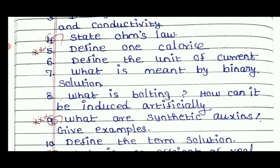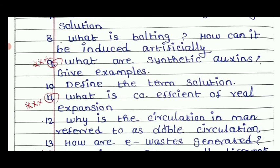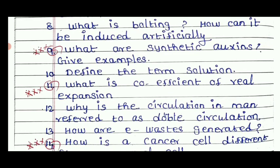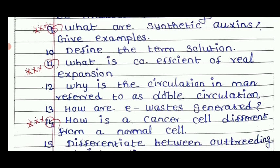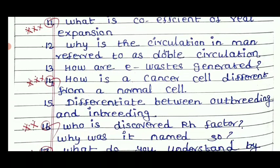We will see physics and chemistry, and also biology and botany. We will see plant hormones — auxin, gibberellin, and cytokinin. Important questions include: What are synthetic auxins? Give an example. Define the term solution. What is the coefficient of real expansion? Why is circulation in man referred to as double circulation?